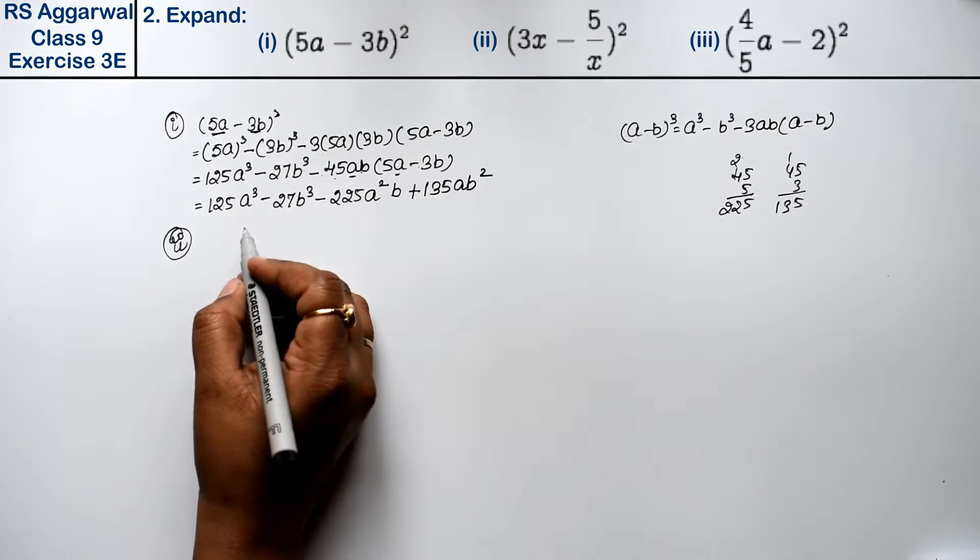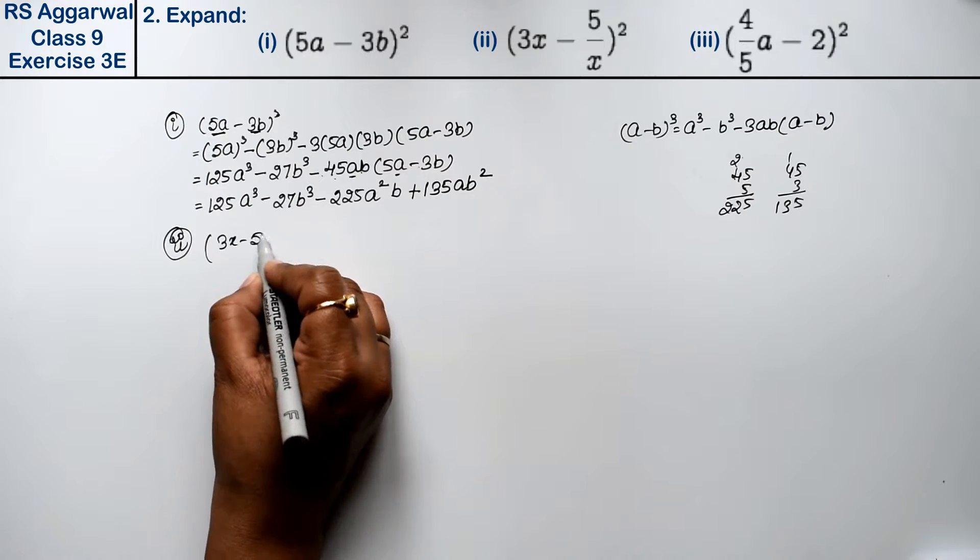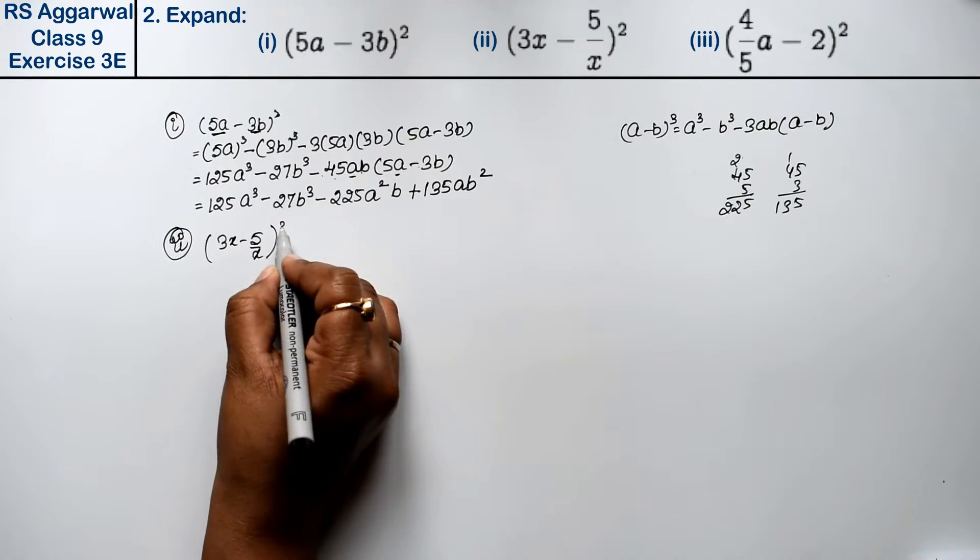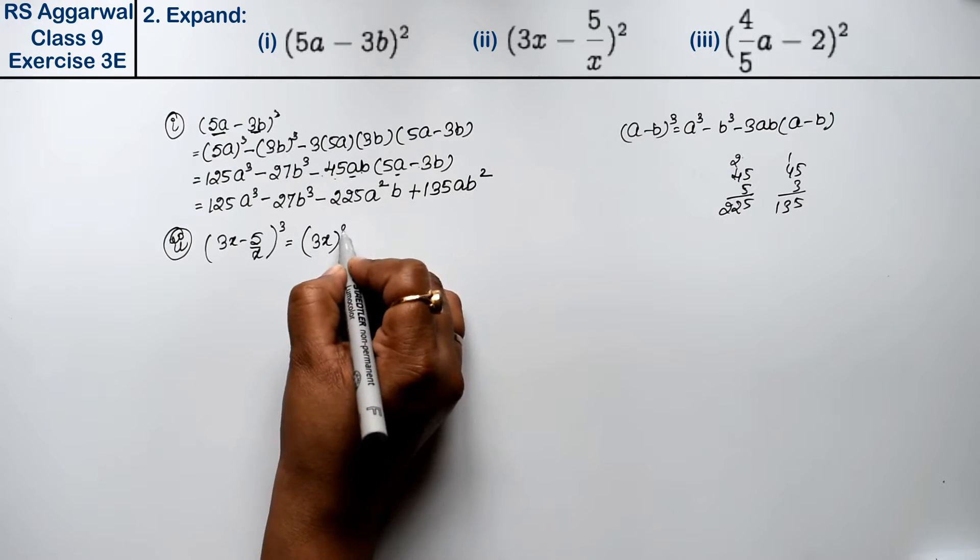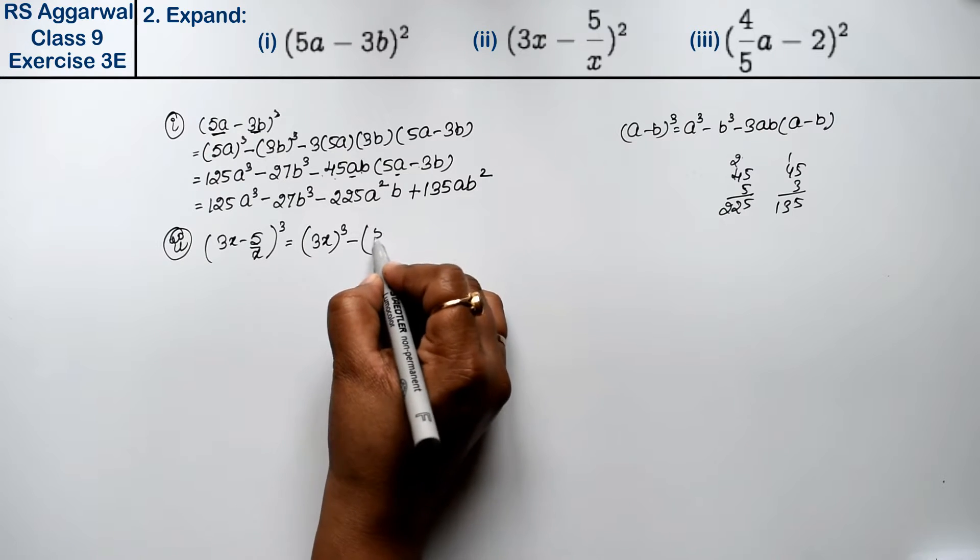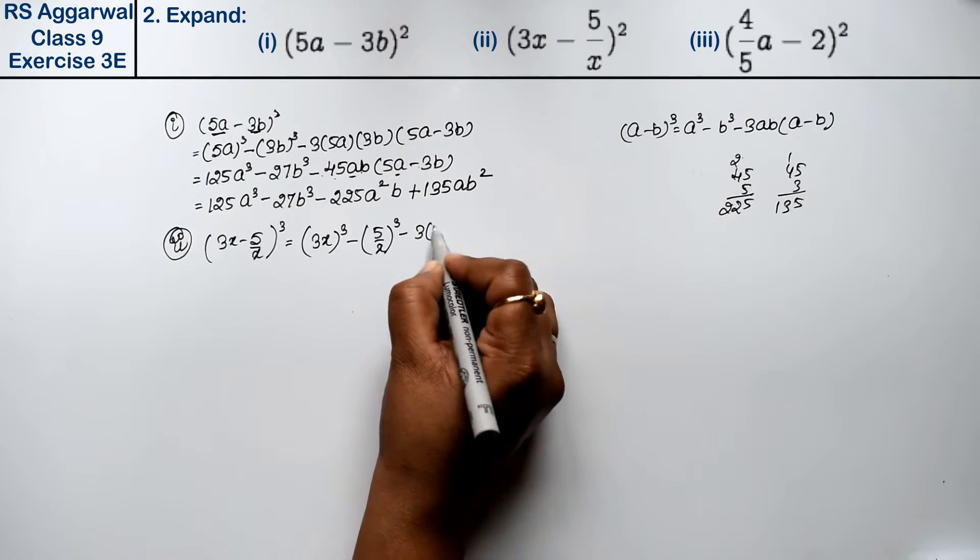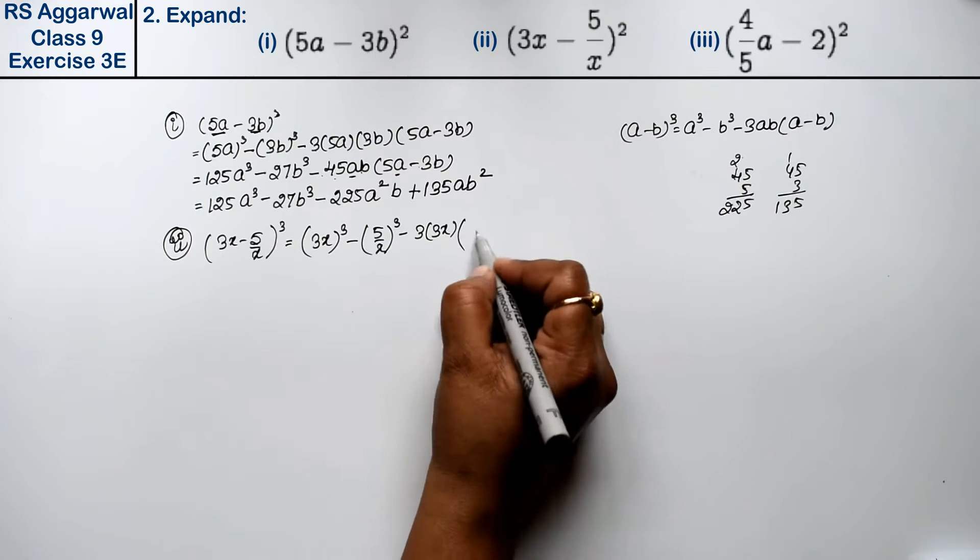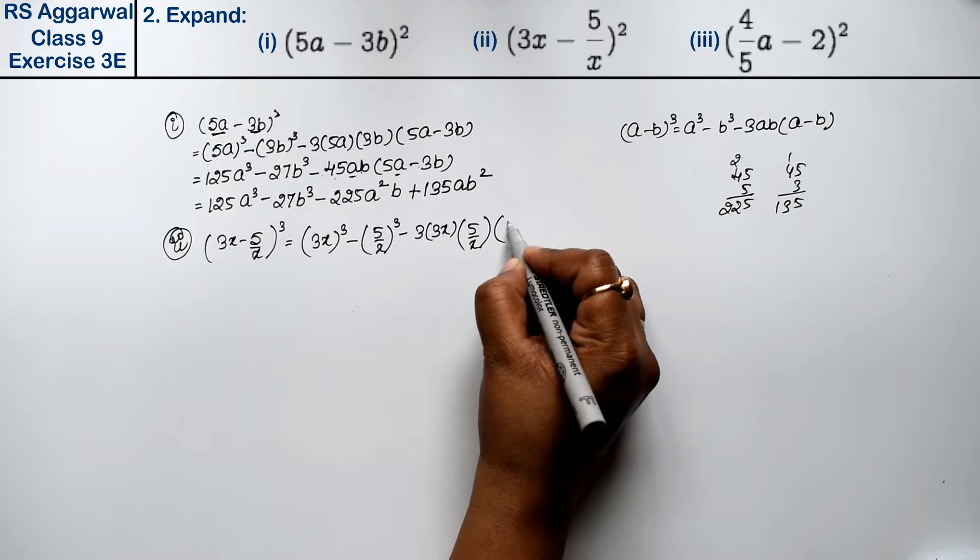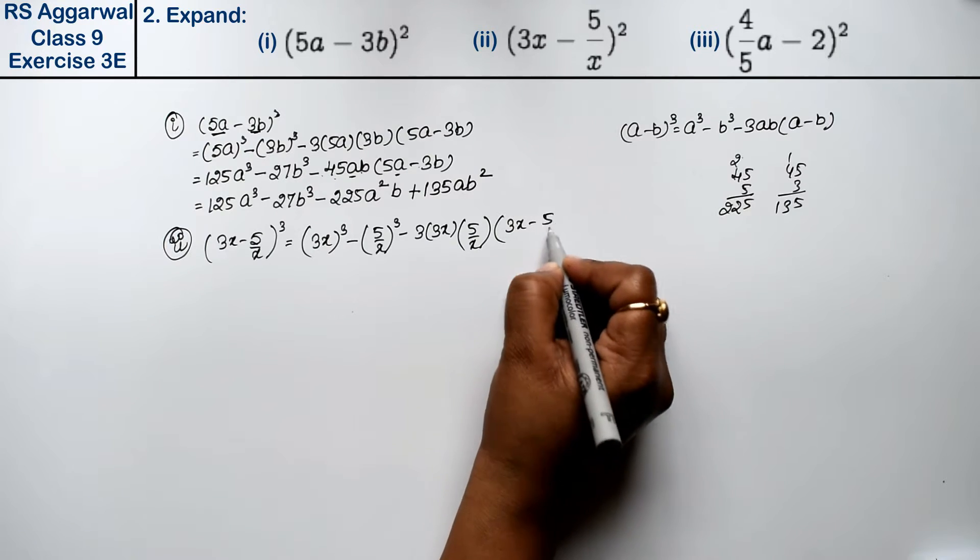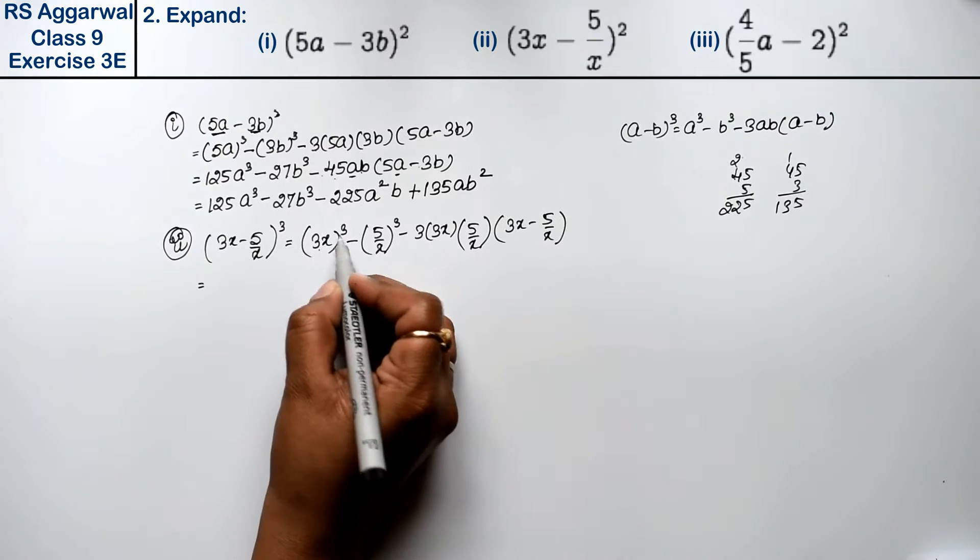Second part is (3x - 5/x) whole cube. Toh kya hooga: a³, that is (3x)³ minus b³ minus 3ab(a - b).